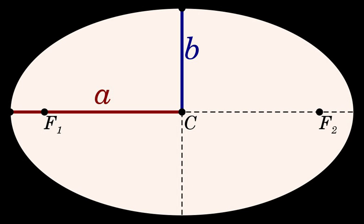The mean value of r for θ = π and θ = 0 gives a = l / (1 − e²).